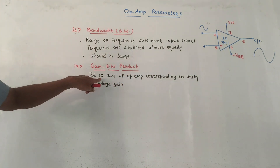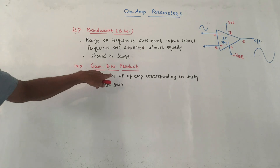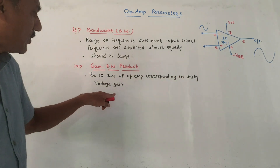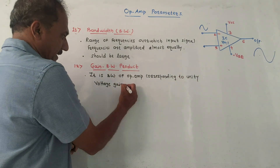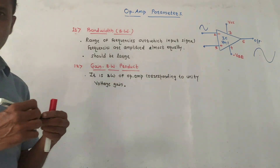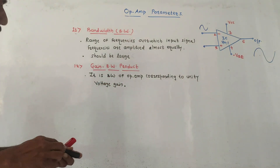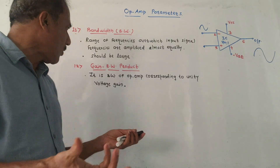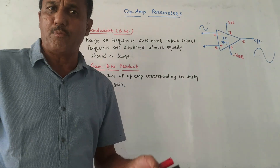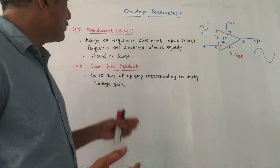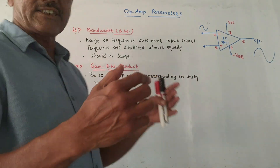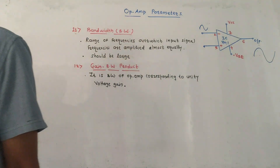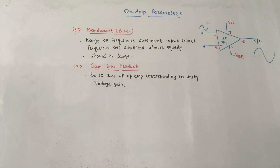Gain bandwidth product is the bandwidth of the op-amp corresponding to unity voltage gain. It is also called the closed loop bandwidth or small signal bandwidth of the op-amp. That's it for today's session — thank you for watching this video.